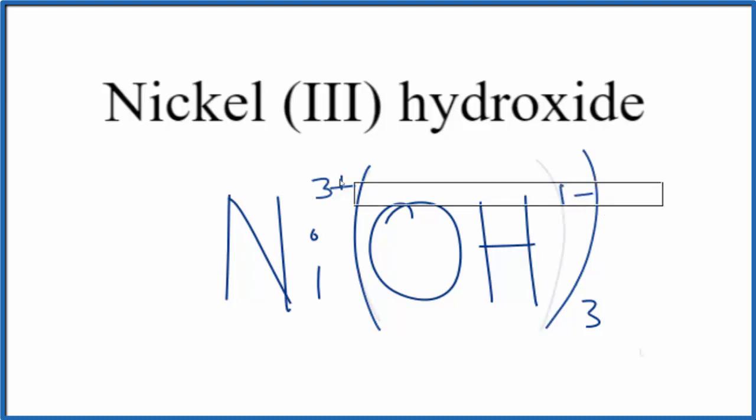Let me remove these symbols, and there you have it, the formula for nickel-3-hydroxide, Ni(OH)3. This is Dr. B. Thanks for watching.